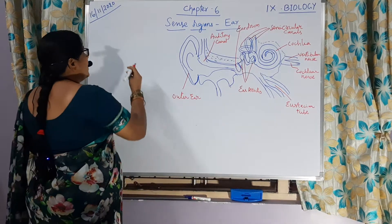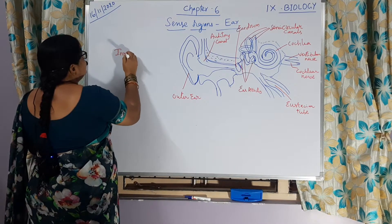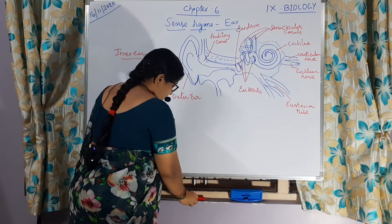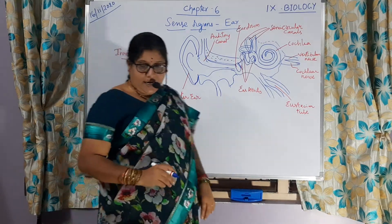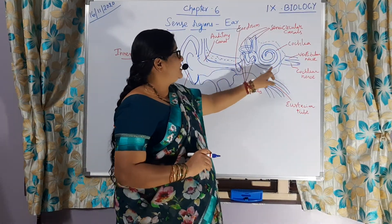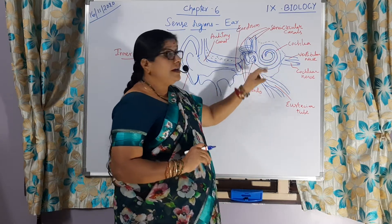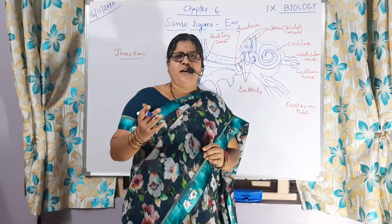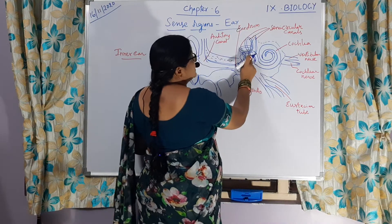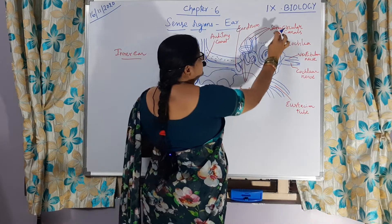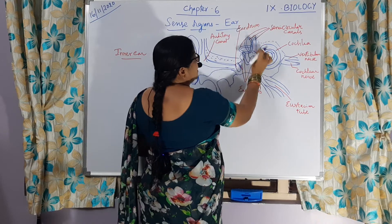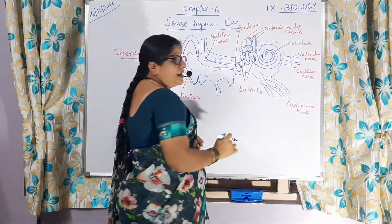Now we will come to the very important part, that is the inner ear. The inner ear contains a bony labyrinth enclosing the membranous labyrinth. This entire portion has a bony structure and membranous labyrinth inside. This portion we call the vestibule, three semicircular canals, and a spiral structure which we call the cochlea.